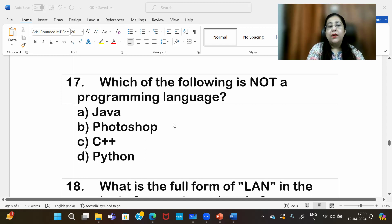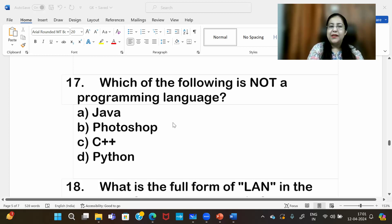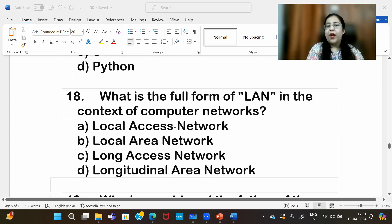Which of the following is not a programming language? Answer is B, Photoshop. Photoshop is an application software, not a programming language. Java, C++, Python are programming languages.